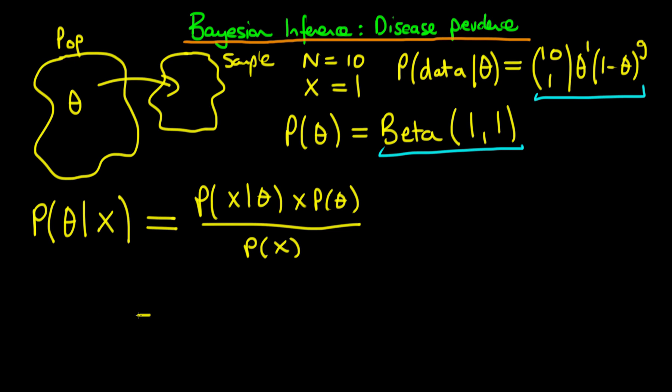We know that in this example, the posterior, because the beta prior is conjugate to a binomial, the posterior is also going to be a beta distribution here.